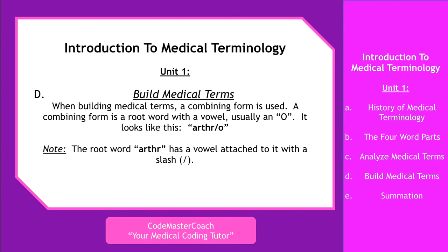When building medical terms, a combining form is used. A combining form is a root word with a vowel — it's usually an O, and it looks like this. See how I have 'arthr', which means joint, then a slash, and then O. So the word root 'arthr' has a vowel attached to it with a slash, and then the vowel.